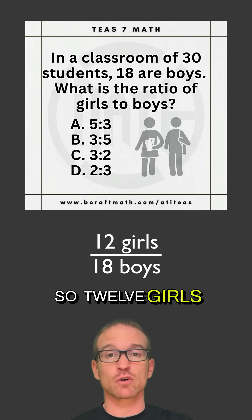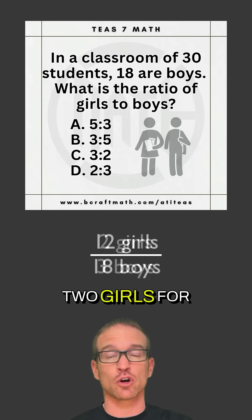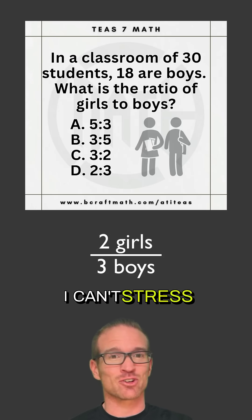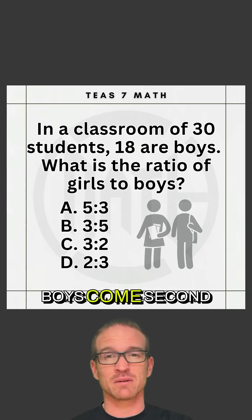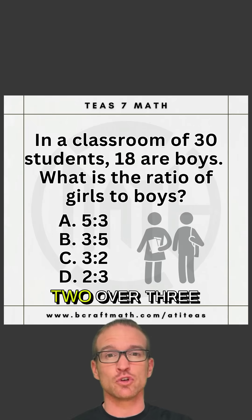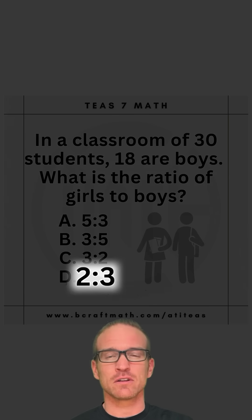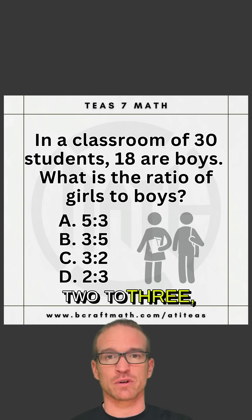So 12 girls to 18 boys is the same thing as 2 girls for every 3 boys. I can't stress it enough — order is important. Girls comes first, boys come second. 2 over 3, or 2 to 3. Notice I use the word 'to' in the place of that colon. So 2 over 3, 2 to 3 — that's why D is our answer.